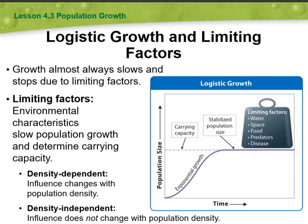Abiotic factors include temperature, water availability, sunlight, and soil nutrients. These factors act as roadblocks that prevent the population from growing independently.